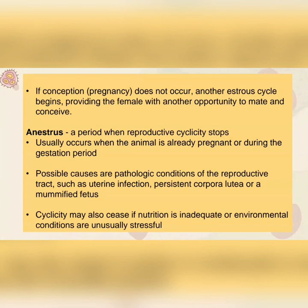Next is the term anestrus. It is a period when reproductive cyclicity stops, and usually occurs when the animal is already pregnant or during the gestation period. Another possible cause includes pathologic conditions of the reproductive tract, such as uterine infection, persistent corpus lutea, or a mummified fetus. Cyclicity may also cease if nutrition is inadequate or environmental conditions are unusually stressful.